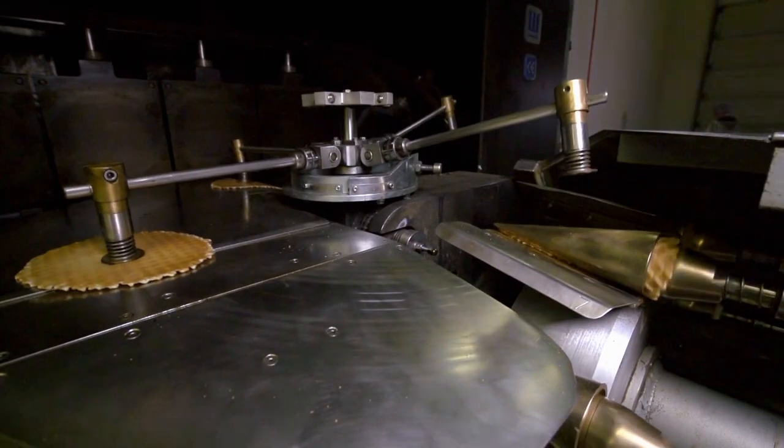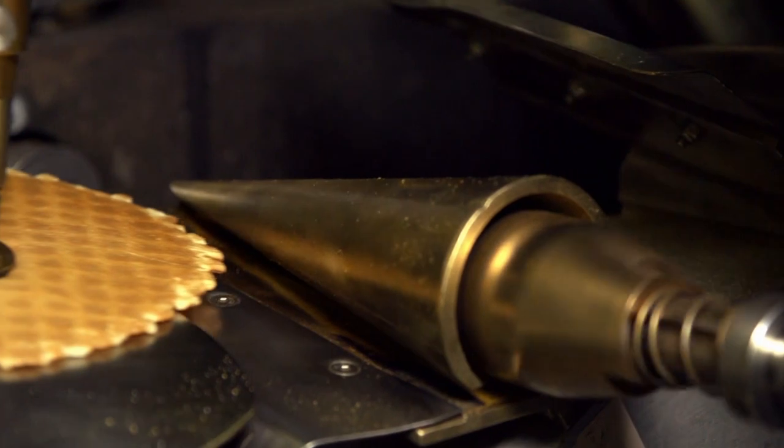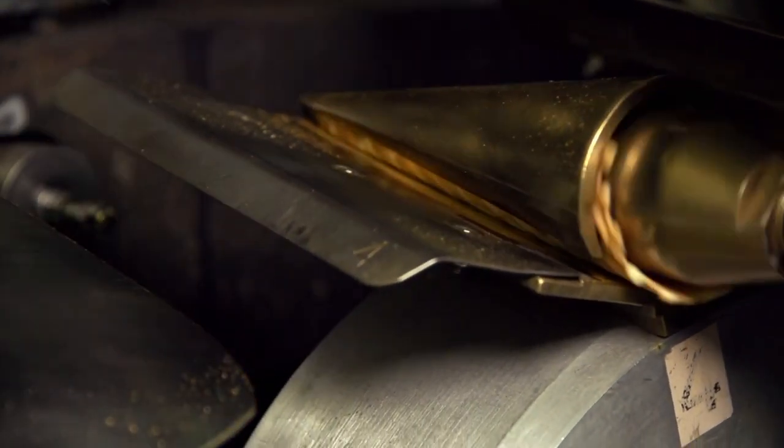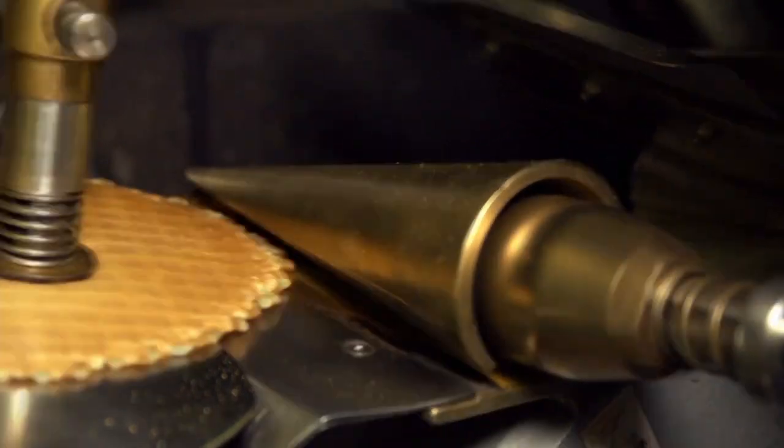The wafer is inserted into a metal cone shape, and a rapidly spinning piston rolls the waffle neatly into a cone. The perfect shape for holding your ice cream.